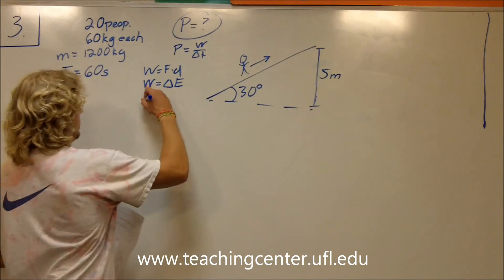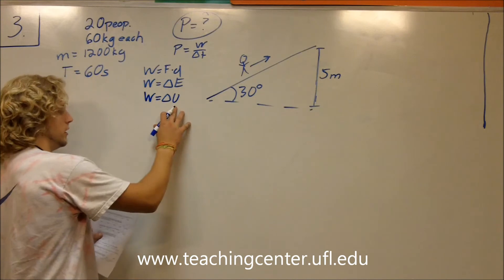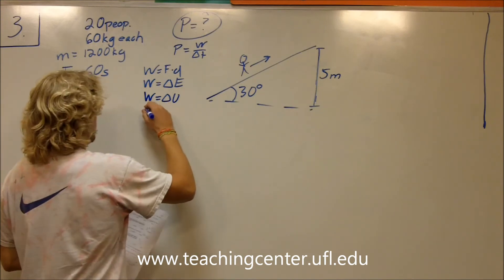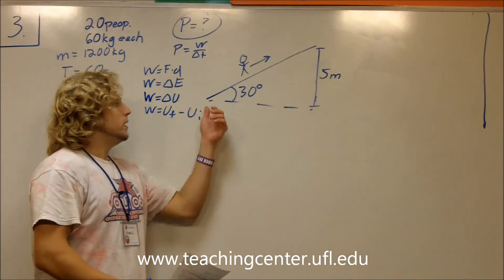You're 5 meters higher, that means you have more potential energy than where you were at the bottom floor. So in this particular case, for this problem, work is the change in potential energy. That means u final minus u initial.